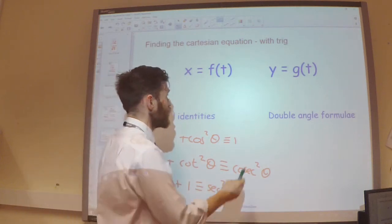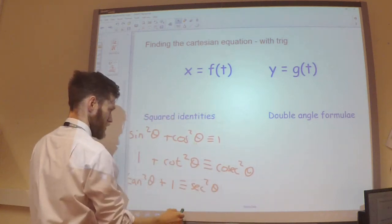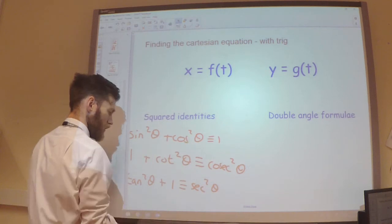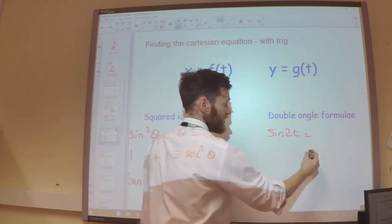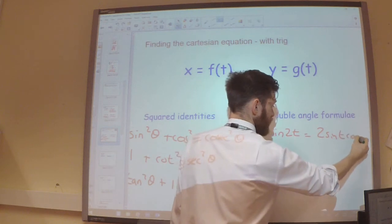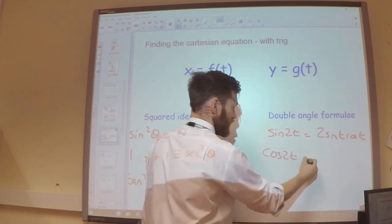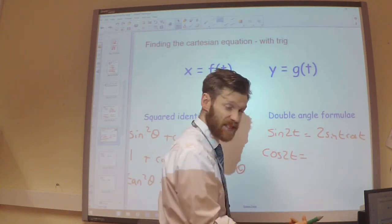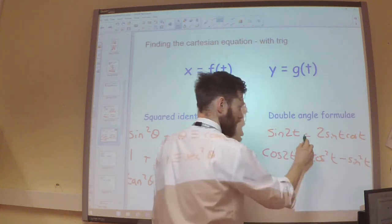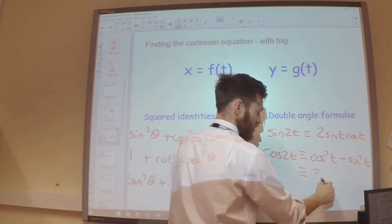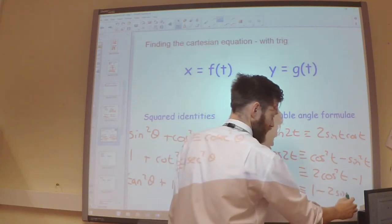But not only that we also have the double angle formula. We've also got that sine 2t is equal to 2 sine t cos t. We've also got cos 2t is equal to 3 different ways of writing this. Remember we know that's going to be cos squared t minus sine squared t. We could also say that it's going to be 2 cos squared t minus 1 or 1 minus 2 sine squared t.